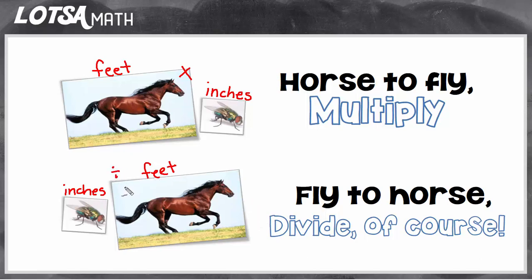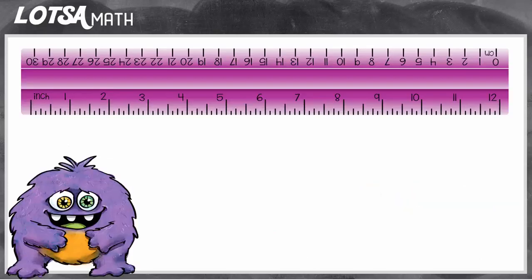So horse to fly, multiply; fly to horse, divide, of course. But what do we multiply or divide by? You have to think about how many are there in one. How many flies are there in one horse? How many inches are there in one foot? Since there are 12 inches in one foot, when we multiply or divide, we're going to use 12. Now let's do some examples.